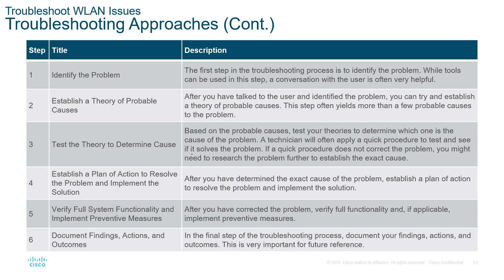The six steps are: identify the problem, establish the probable cause, test the theory to determine the cause, establish a plan to resolve the problem, verify if the system is functional — if not, go back to step two — and if it is functional, document your findings, actions, and outcomes.